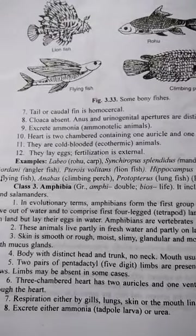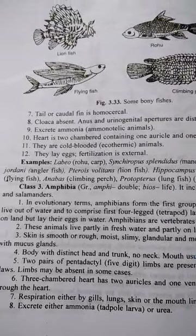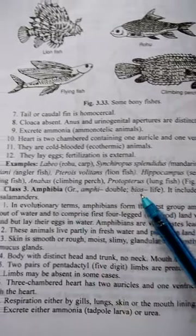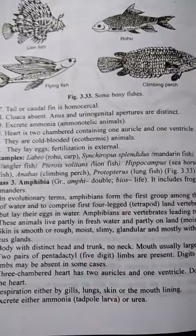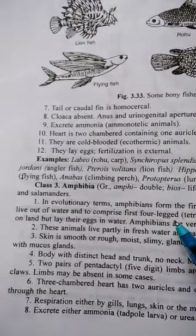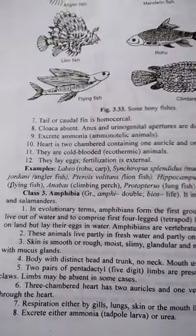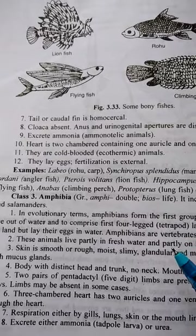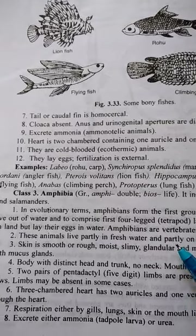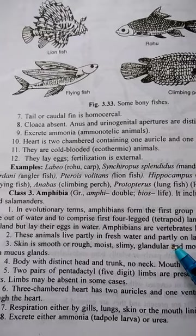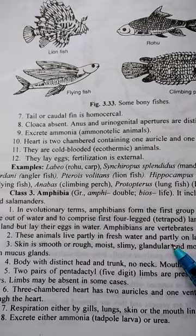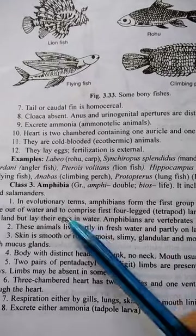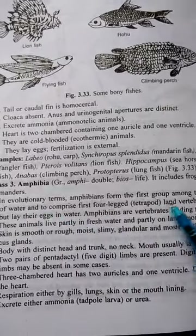Dear students, today I am going to study Amphibia. Amphibia means double and bias means life. It includes frogs, toads, newts and salamanders. Amphibians live on both land as well as in water. This is Amphibia — an evolutionary term for animals that can live on land as well as in water.